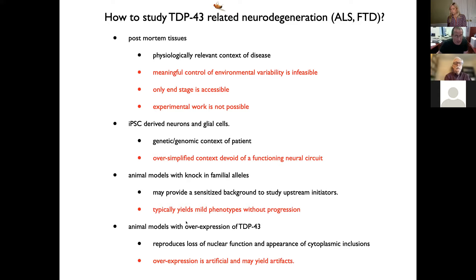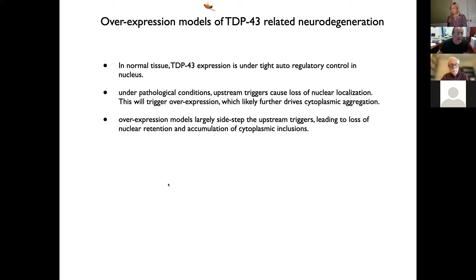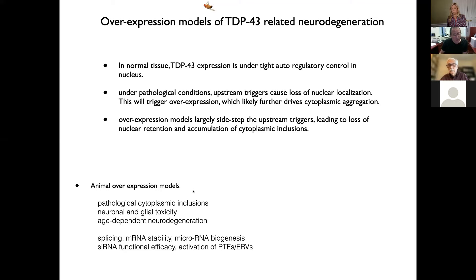The model I'm going to tell you about is in fruit flies. When we overexpress TDP-43, I think we may tap into a dysfunction in the auto-regulatory control that may mimic what happens in diseased cells — that the loss of nuclear function may lead to a runaway expression of the protein, which may then lead to overexpression and further drive aggregation of the protein in inclusions in the cytoplasm. When we do this in Drosophila, as with many other animal models, we observe pathological cytoplasmic inclusions. These are hyperphosphorylated, they lead to neuronal and glial toxicity, and an age-dependent neurodegenerative effect.